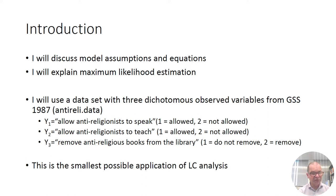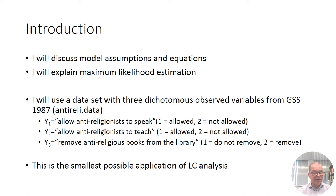It consists of three variables with two categories. The topic is attitudes towards persons that express themselves anti-religion. The first variable is answered by 'allowed' or 'not allowed' — the question is: allow anti-religionists to speak. The second variable is allow anti-religionists to teach. And the third variable is remove anti-religious books from the library. One means 'not remove', two means 'remove'.